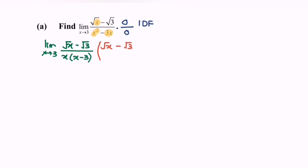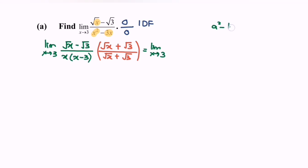The conjugate reverses the sign, so we have plus. Next, expand — but remember, only expand one part. Use the formula a squared minus b squared, because we are multiplying by the conjugate. So we will have square root of x squared minus square root of 3 squared in the numerator.